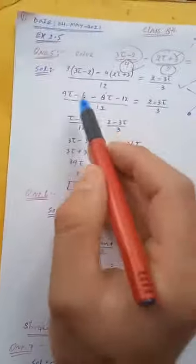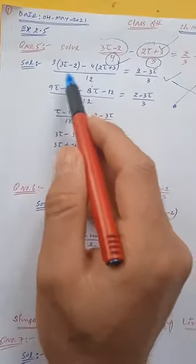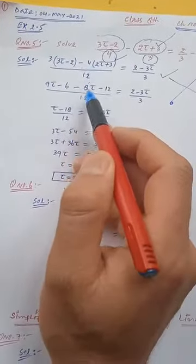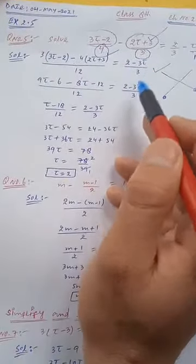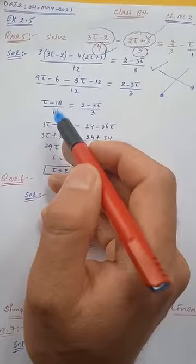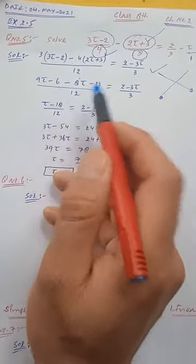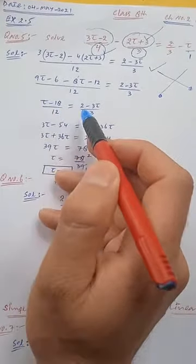Now next step: 3 × 3t is 9t, minus 3 × 2 is 6. Minus 4 × 2t is 8t, minus plus is minus, 4 × 3 is 12, divided by 12 as it is, equal to (2 - 3t)/3. So 9t minus 8t is t, minus 6 minus 12 is minus 18. (t - 18)/12 = (2 - 3t)/3. Now again here we can do cross multiplication.